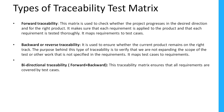There are three types of traceability matrix: forward traceability matrix, backward or reverse traceability matrix, and bidirectional traceability matrix. Forward traceability matrix is used to check whether the project progresses in the desired direction and for the right product. It makes sure that each requirement is applied to the product and tested thoroughly, mapping requirements to test cases.